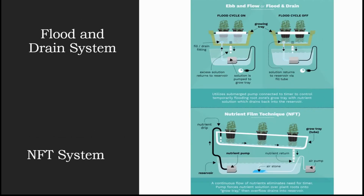Now, the flood and drain system: it works by temporarily flooding the growth tray with nutrient solution and then draining the solution back into the reservoir. This action is normally done with a submerged pump connected to a timer. When the timer turns the pump on, nutrient solution is pumped into the growth tray; when the timer shuts the pump off, the solution flows back into the reservoir. The timer is set to come on several times a day depending on the size and type of plants, temperature, humidity, and the type of growth medium being used.